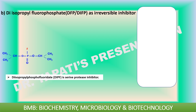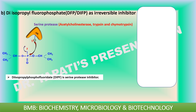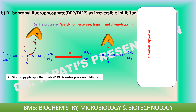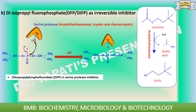Diisopropyl fluorophosphate is a serine protease inhibitor. It irreversibly inhibits biological systems by forming an enzyme-inhibitor complex with a specific hydroxyl group of serine situated at the active sites of certain enzymes. Acetylcholinesterase is a cholinergic enzyme primarily found at post-synaptic neuromuscular junctions, especially in muscles and nerves. It immediately breaks down or hydrolyzes acetylcholine, a naturally occurring neurotransmitter, into choline and acetic acid.